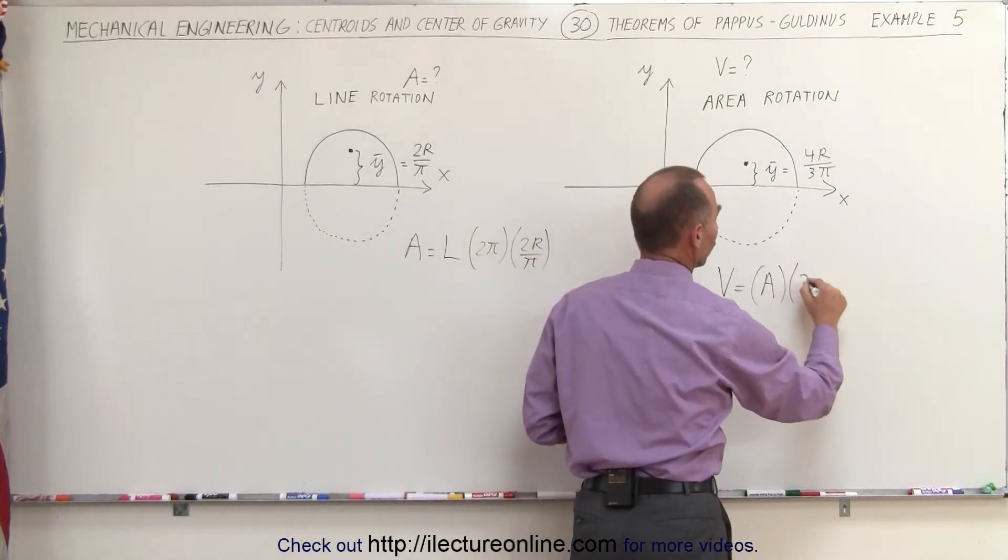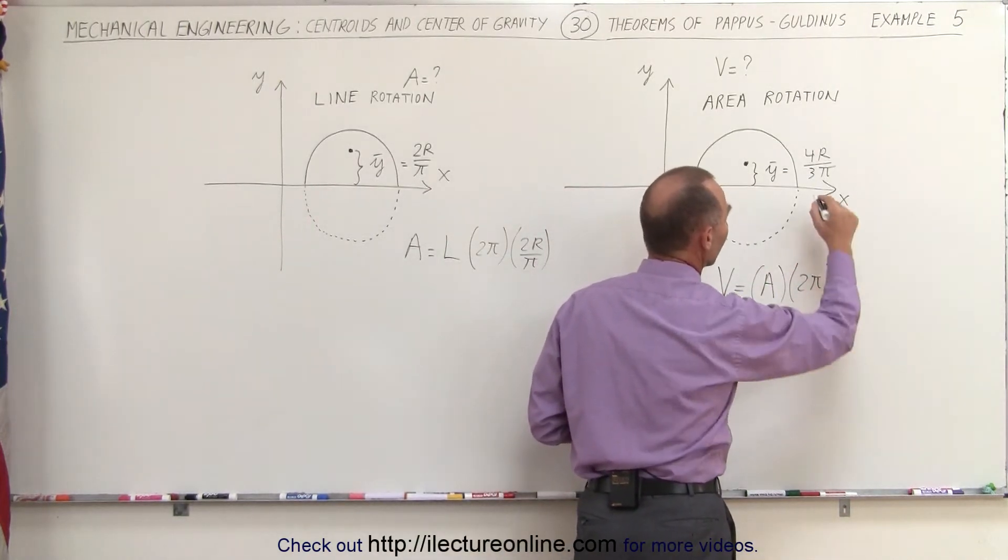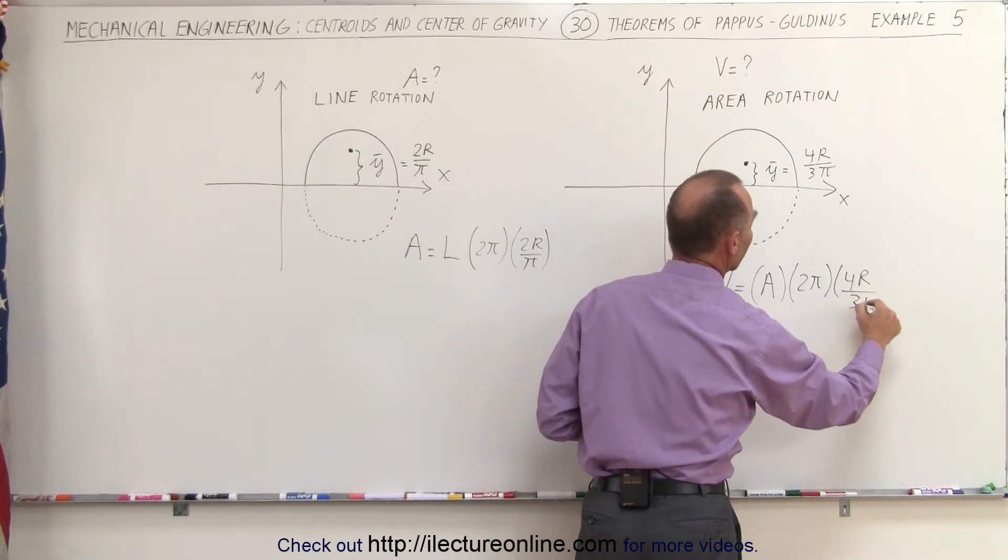The distance traveled, again, it's a circle. 2π times the radius, in this case, the radius is 4r divided by 3π.